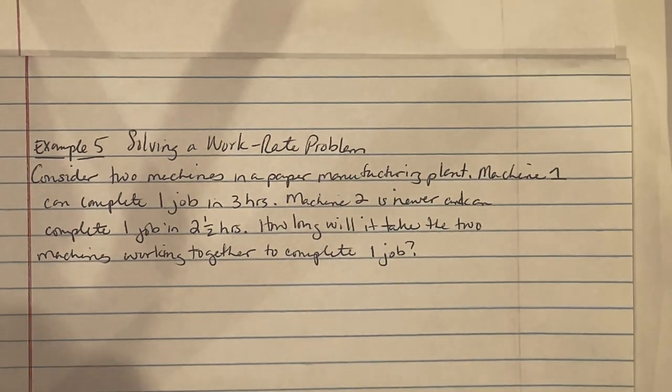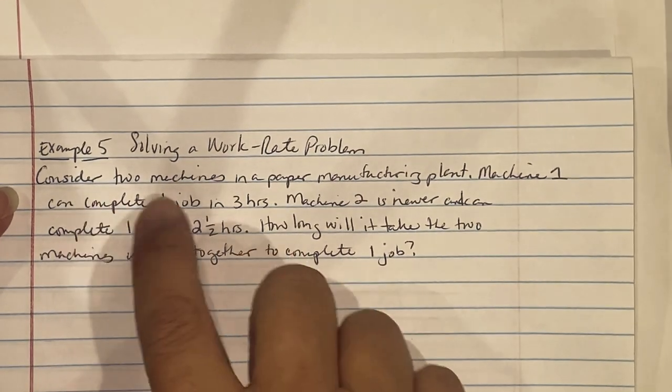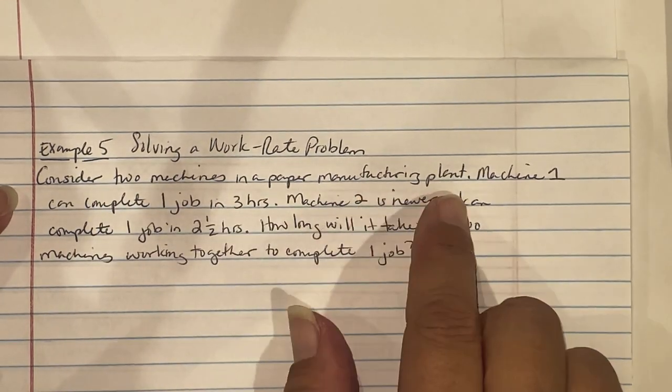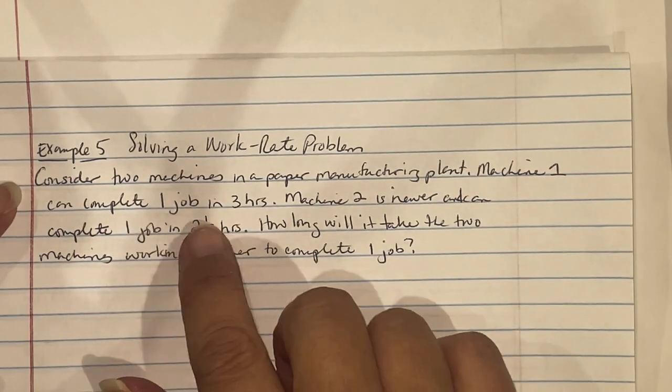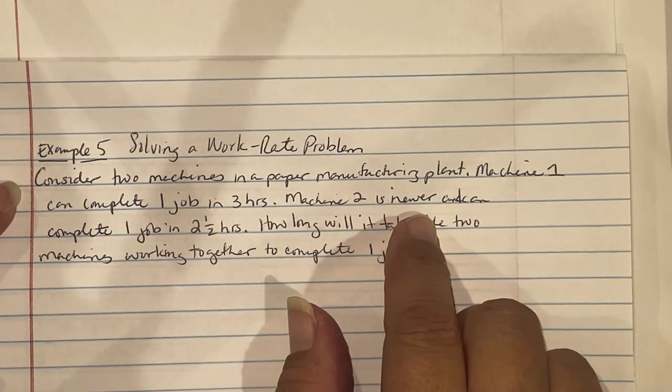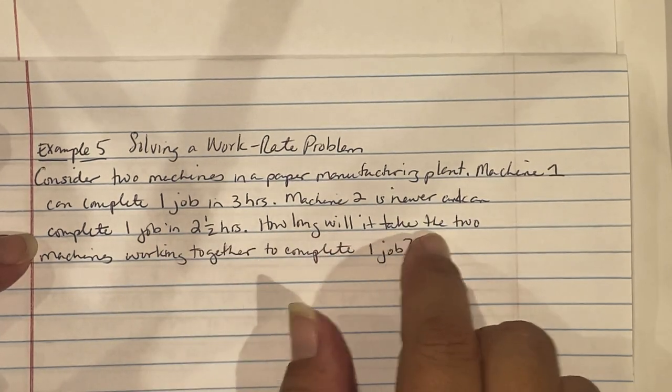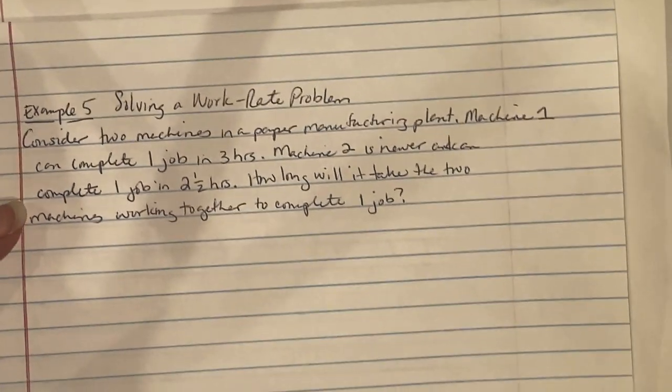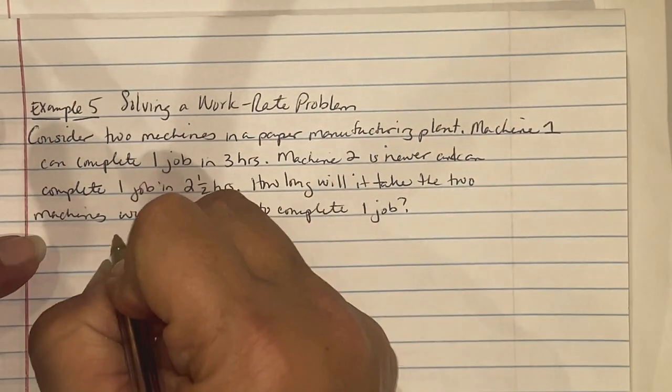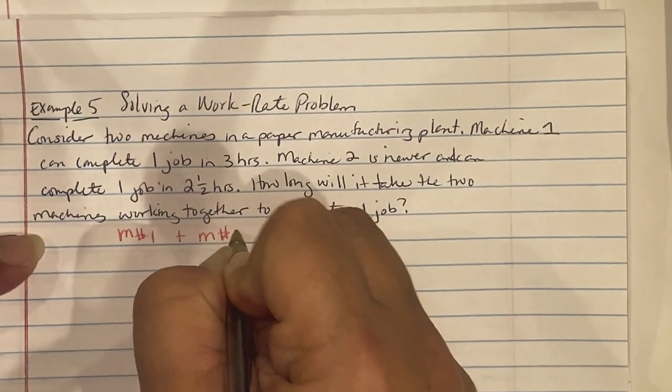Example 5, solving a work rate problem, says consider two machines in a paper manufacturing plant. Machine 1 can complete one job in 3 hours. Machine 2 is newer and can complete one job in 2.5 hours. How long will it take for the two machines working together to complete one job? First thing you need to start with is a header: machine 1 plus machine 2 equals together.